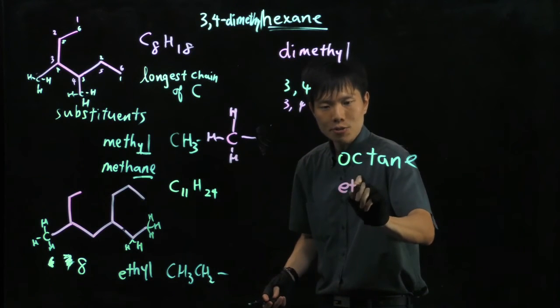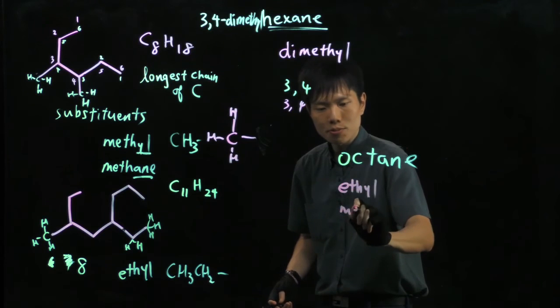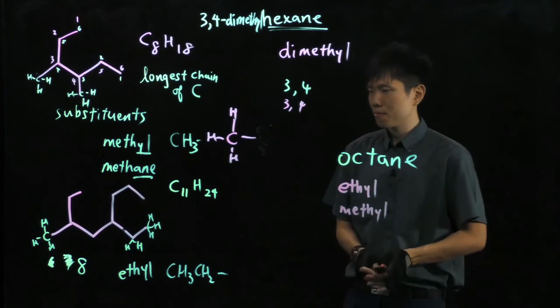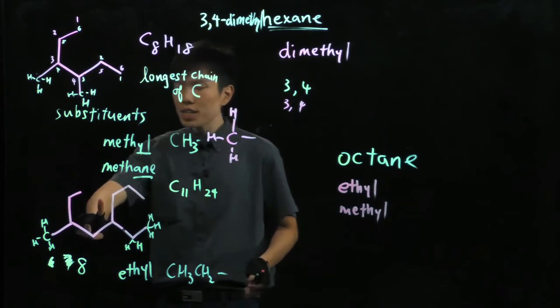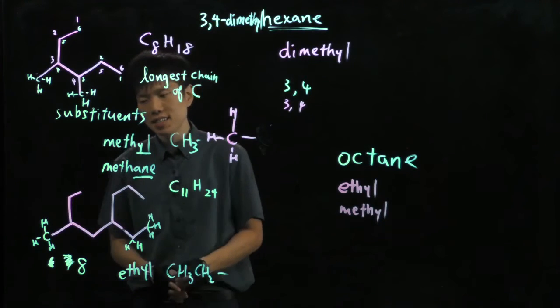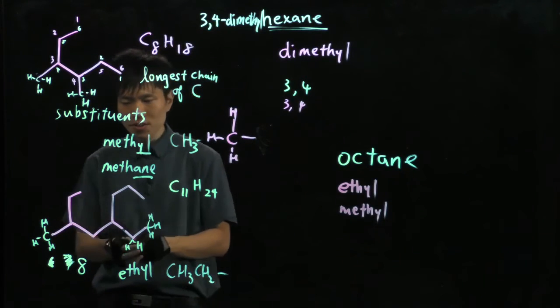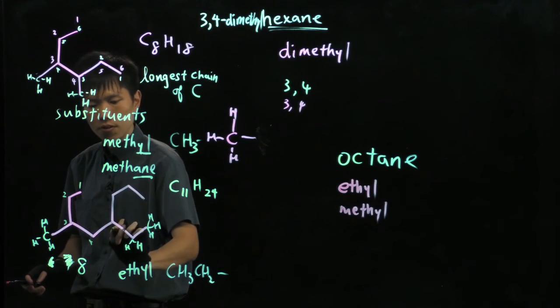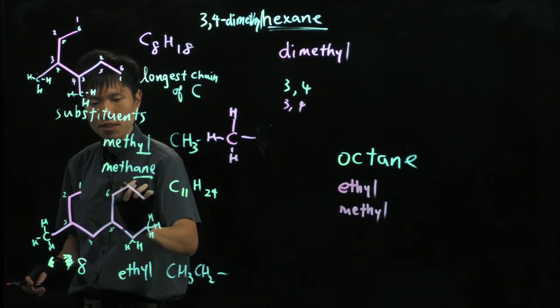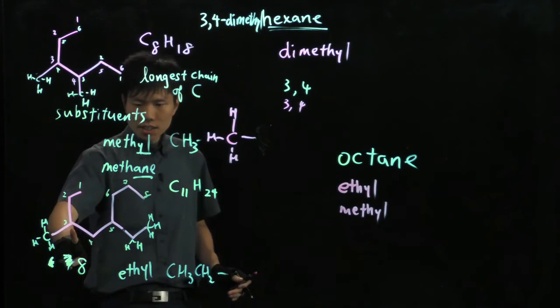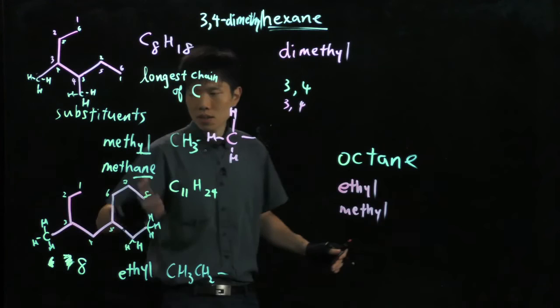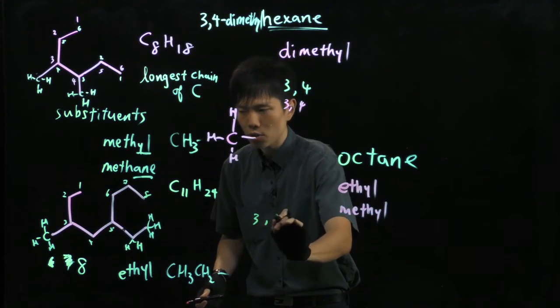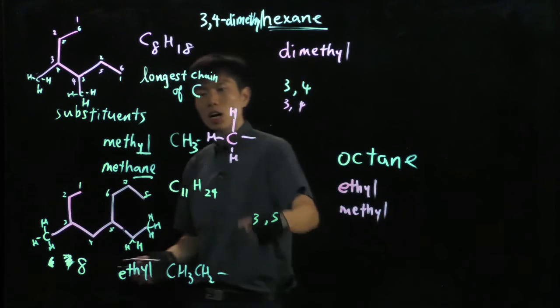So we write down, we have an ethyl group, we also have a methyl group. And at which position are they? So we have to ask ourselves, do we come from this side or the other side? Suppose we label from here. Let's use the green marker. 1, 2, 3, 4, 5, 6, 7, 8. At the third and the fifth carbon, we see substituents. So for the green marker, it's 3, 5. If I run it from the opposite side.